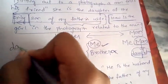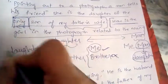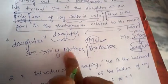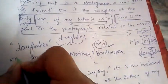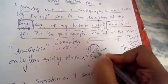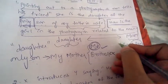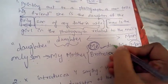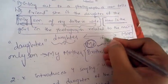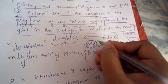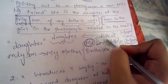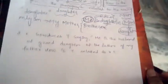So what is the relationship between the photograph girl and the man? It is a father-daughter relationship. To recap: only son of my mother is me; daughter of me is my daughter — so I am the father of my daughter. The relationship between the photograph girl and the man is father and daughter.